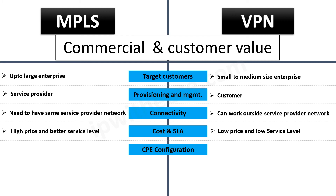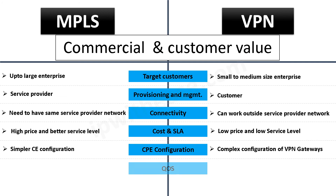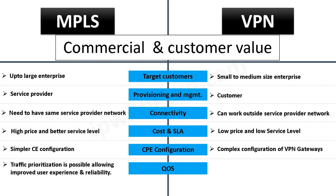MPLS wins in terms of simpler CPE configuration as compared to VPN, which requires highly skilled resources to perform VPN gateway configuration. QoS and traffic preference becomes very important for organizations having multiple locations, since reliable and improved customer experience is directly related to increase in revenue. Traffic prioritization is achievable with MPLS, while VPN traffic cannot be prioritized over the internet and always remains best effort.